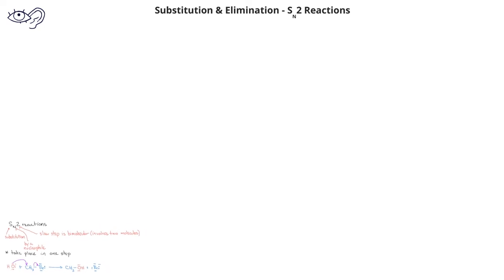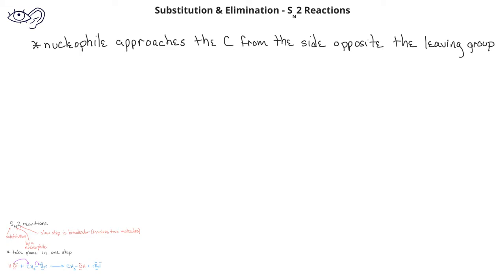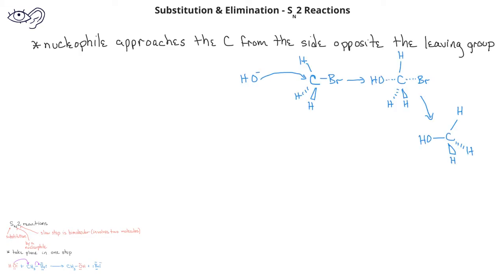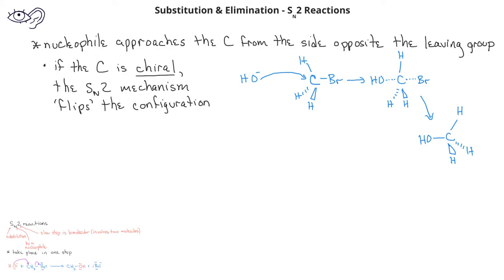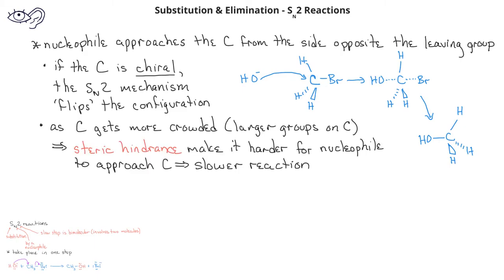The nucleophile in SN2 reactions approaches from the side of the carbon opposite the leaving group. If this carbon is a chiral carbon, the SN2 mechanism flips the configuration of the carbon. As the carbon gets more crowded, this leads to what's known as steric hindrance. Because it's so crowded, it's more difficult for the nucleophile to approach the carbon, and that slows the SN2 reaction down.